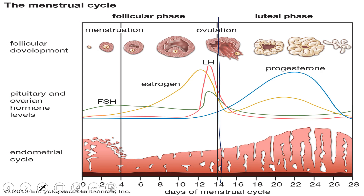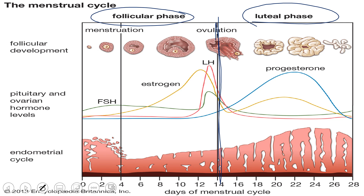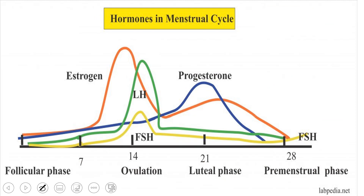The cycle has a follicular phase and a luteal phase; some books divide it into four phases including ovulation and menstruation. Looking at hormone levels on a graph: FSH is elevated early and surges near day 14 along with the LH surge. FSH stimulates estrogen formation from growing follicles. Estrogen has two peaks — one just before ovulation and one in the luteal phase. Progesterone rises only in the luteal phase.